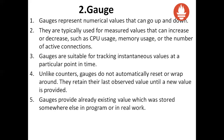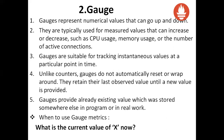Gauges provide an already existing value which was stored somewhere else in the program or in real time. The gauges just calculate and show the value which we have stored somewhere else in our program or in the real world — they search for that value and give it in the format we want. When to use gauge metrics: if you want to calculate the instantaneous value, as seen in point 3, we use the gauge metric.